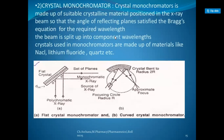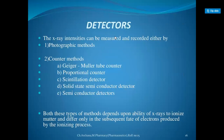A crystal monochromator is made up of a suitable crystalline material positioned in the X-ray beam so that the angle of the reflecting planes satisfies the Bragg equation for the required wavelength. The beam is split into component wavelengths. Crystals used in monochromators are made up of materials like NaCl, lithium fluoride, quartz, etc.